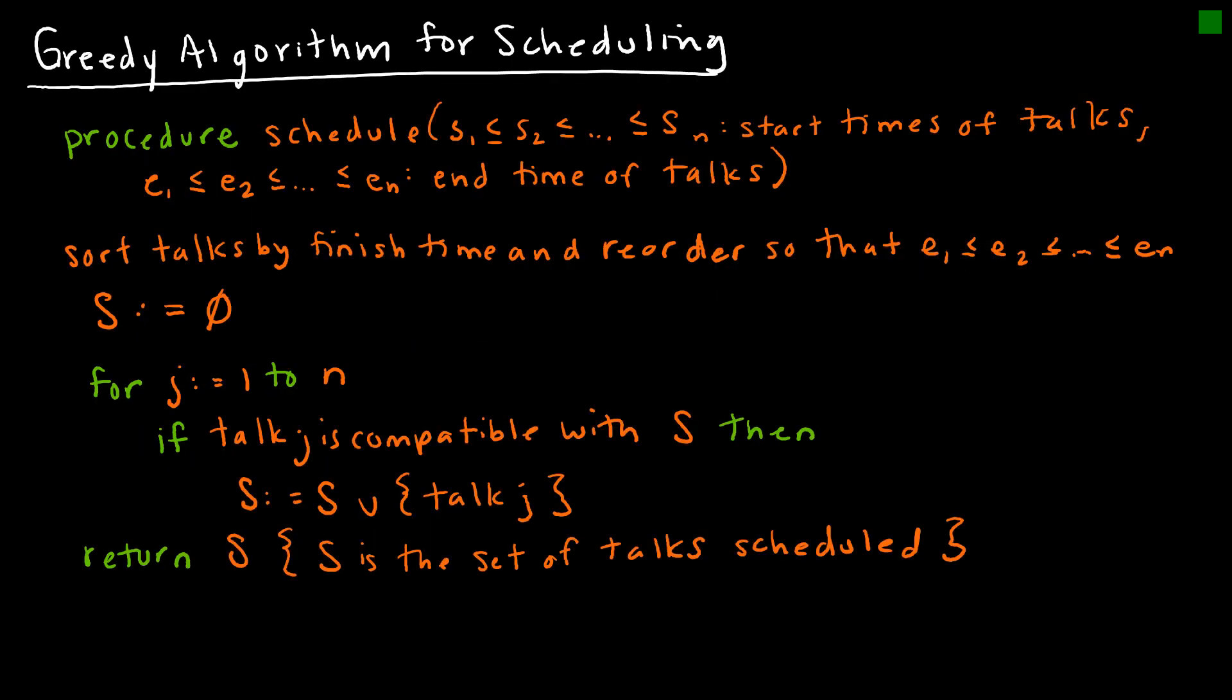Again, we can look at the pseudocode of that, which basically talks about the end time of talks. And so it's saying let's look at the earliest end time, schedule that first. Continue to schedule those that are compatible with what we have already scheduled, meaning it doesn't overlap, but it could start at the same time as when the other one ends. Our value that is returned is the set of talks that are scheduled.